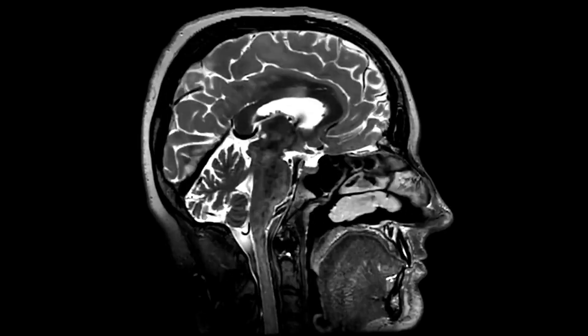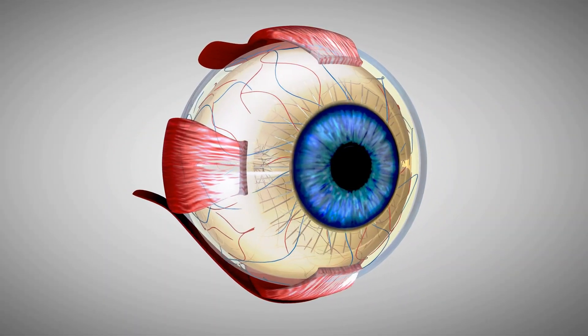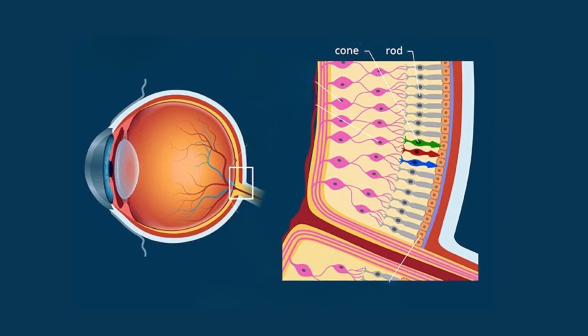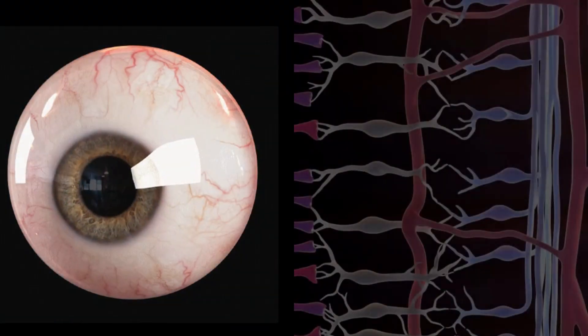The retina in our eyes contains two types of receptors known as cones and rods. These receptors play crucial roles in our ability to see in different lighting conditions.